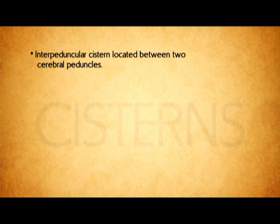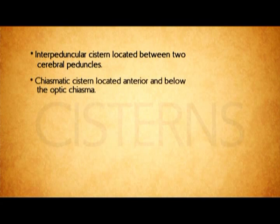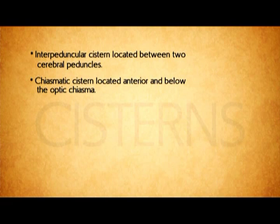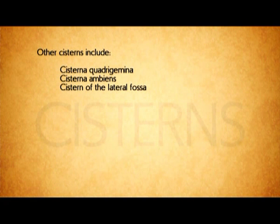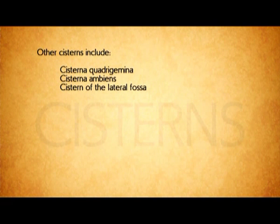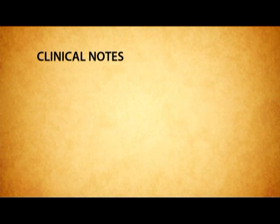The interpeduncular cistern is located between the two cerebral peduncles. The chiasmatic cistern is located anterior and below the optic chiasma. There are other cisterns: cisterna quadrigemina and cisterna ambiens, which are all localized enlargements of the subarachnoid space.